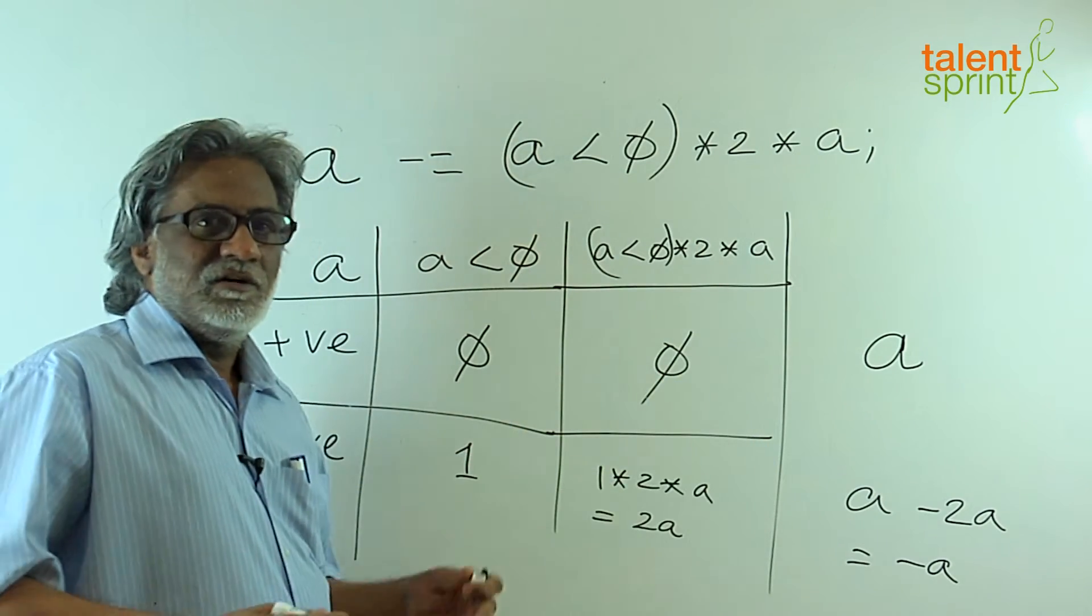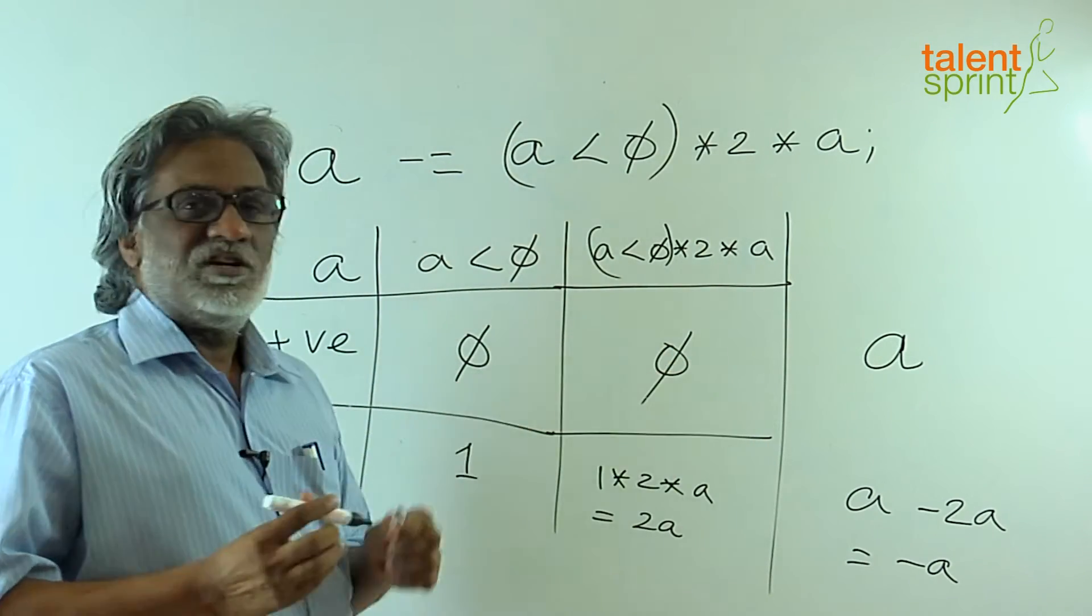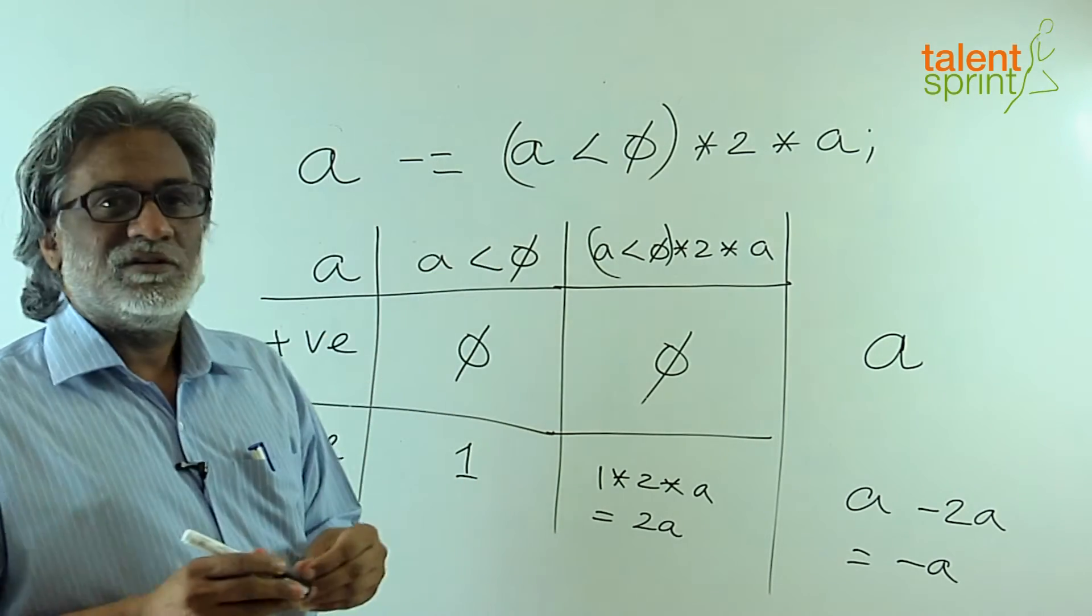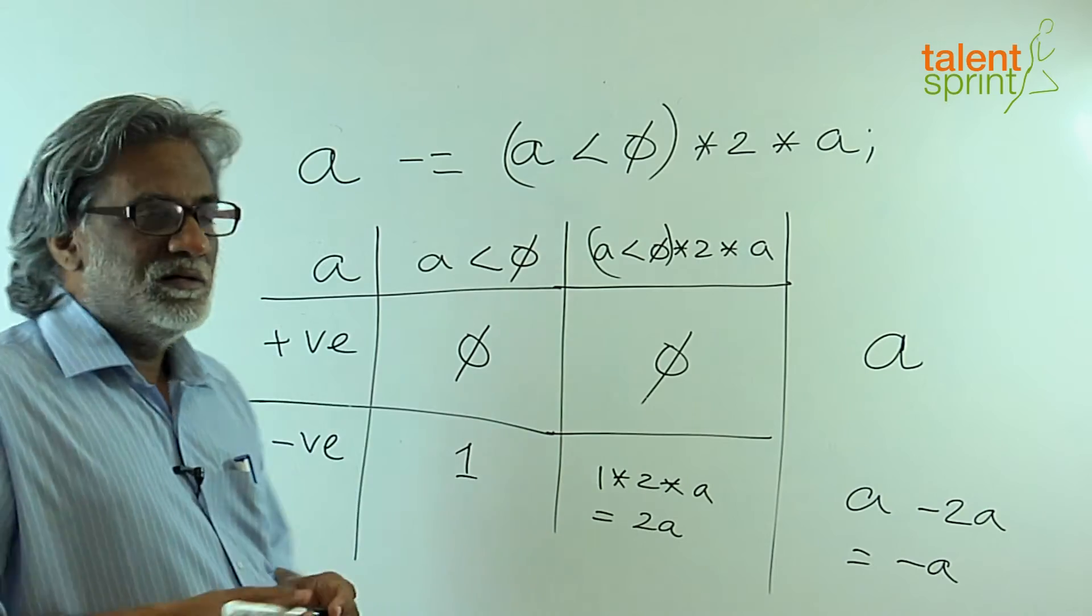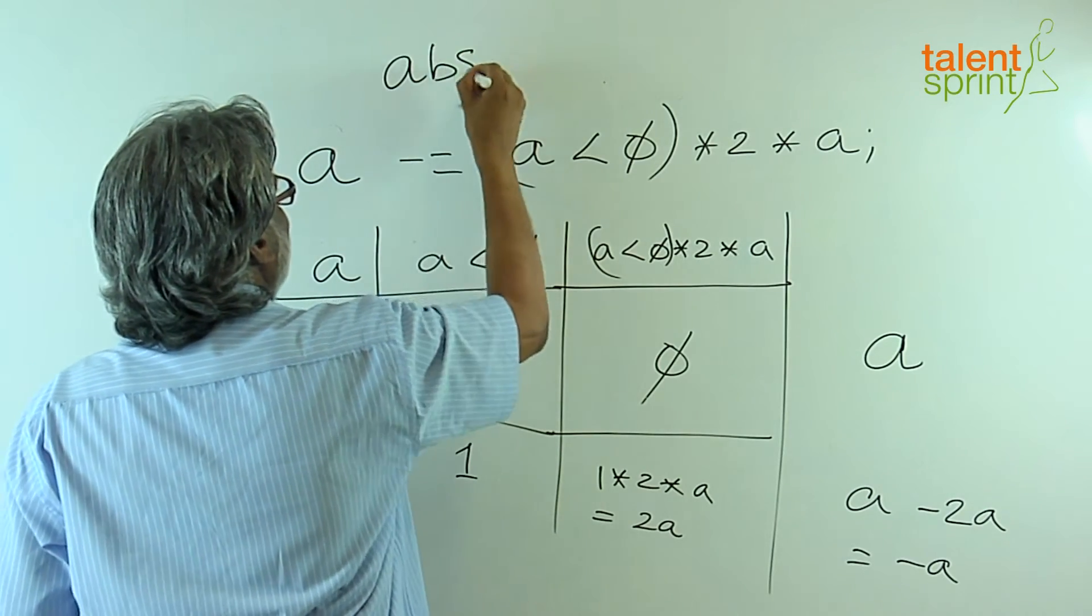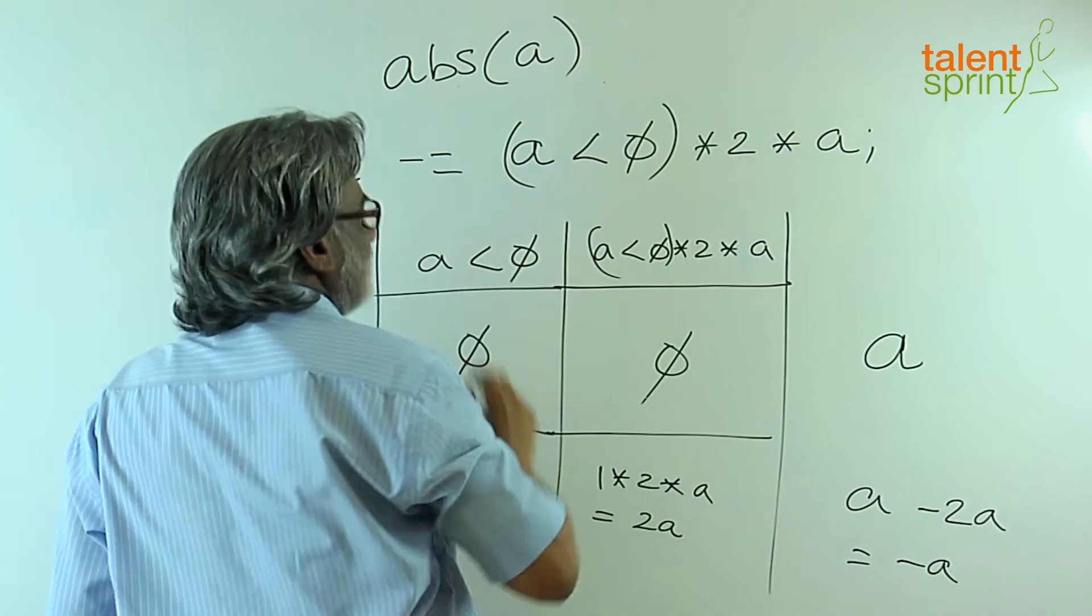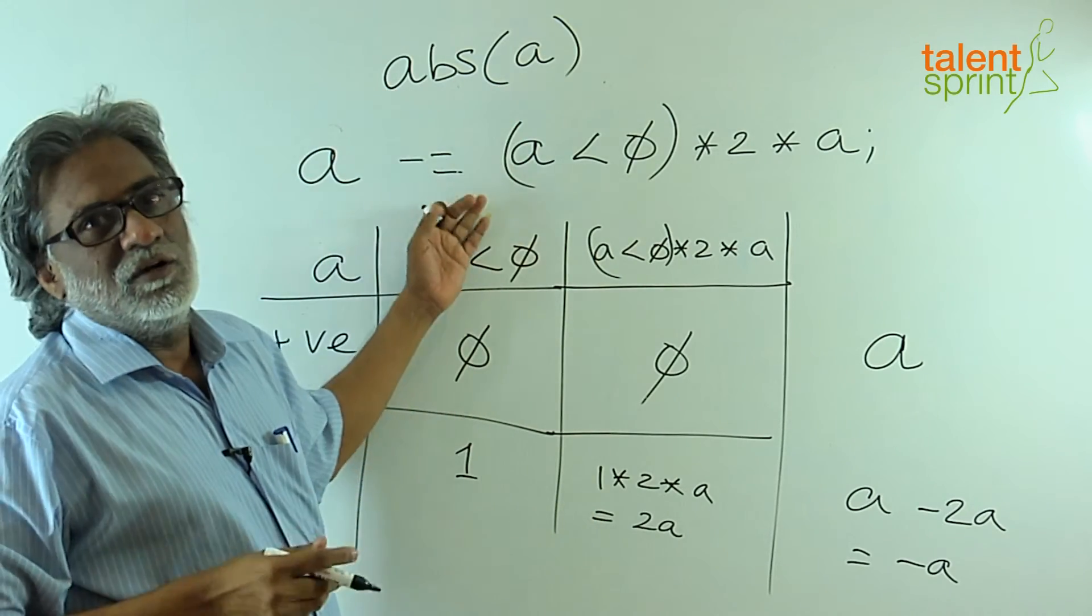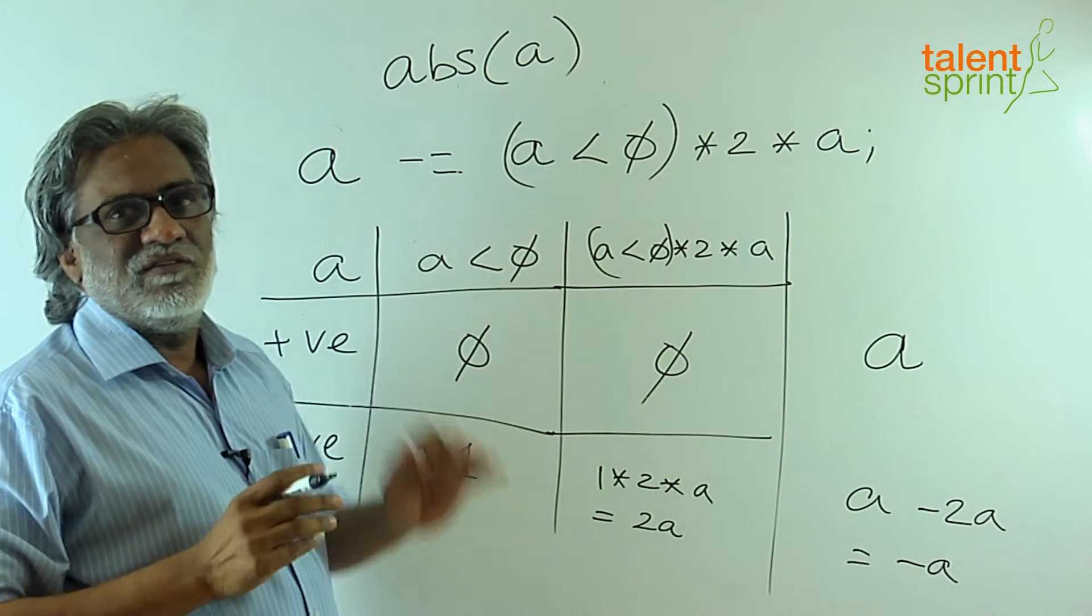Remember, a is negative. So this means the positive value of a will be returned. So this complicated expression is actually nothing but a very convoluted way of implementing the abs function. If a is negative, return the positive value. If a is positive, return the value.